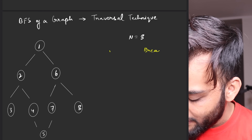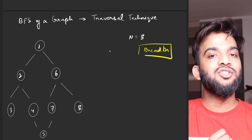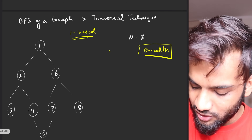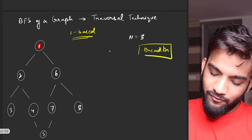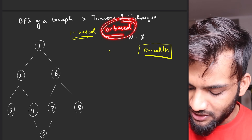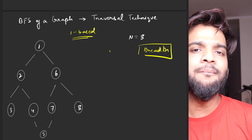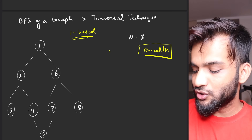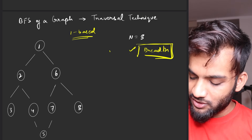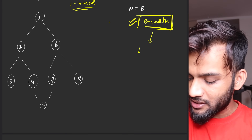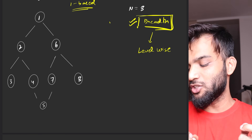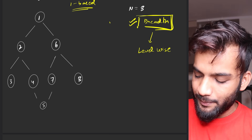Graphs can be of two kinds: one-based indexing, where node numbering starts from one, or zero-based indexing, where it starts from zero. The logic remains the same — you just write code accordingly. Now, the term 'breadth' in Breadth First Search is very important. It signifies level-wise traversal, which is why BFS is also called level-wise traversal.